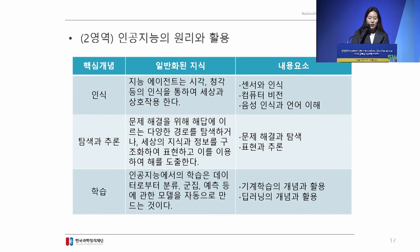In the second area, people often associate AI with machine learning. However, AI includes not only learning, but also recognition, search, and inference. Recognition, search, inference, and learning are the key concepts of AI. There are many tools available to help students experience what these core concepts are.